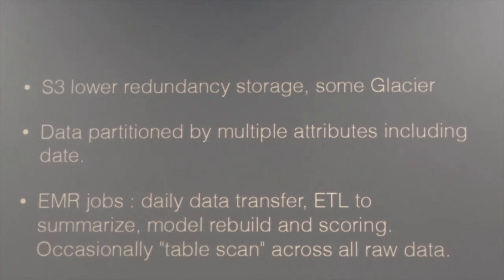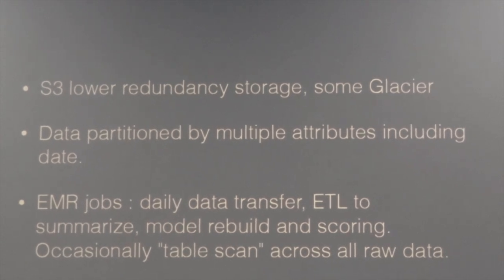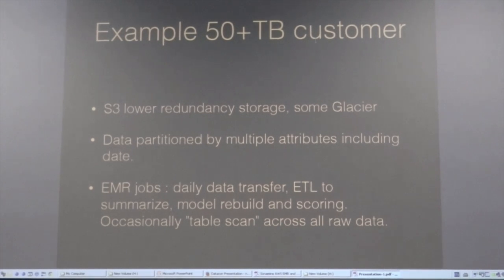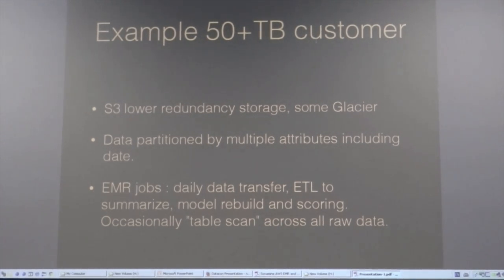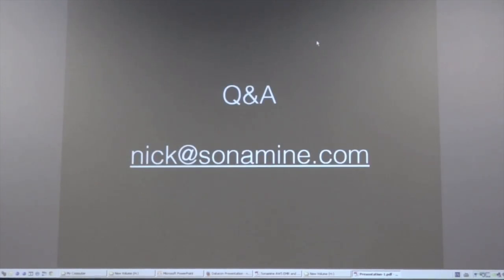As an example, a 50 terabyte S3 cost is about 1,500 to 2,000 dollars depending on how you do it. There's Glacier, which is lower-cost archival storage, and then lower redundancy. S3 generally stores data in three data centers — that's more costly. If you store data in only two data centers, it's much cheaper — that's called reduced redundancy.